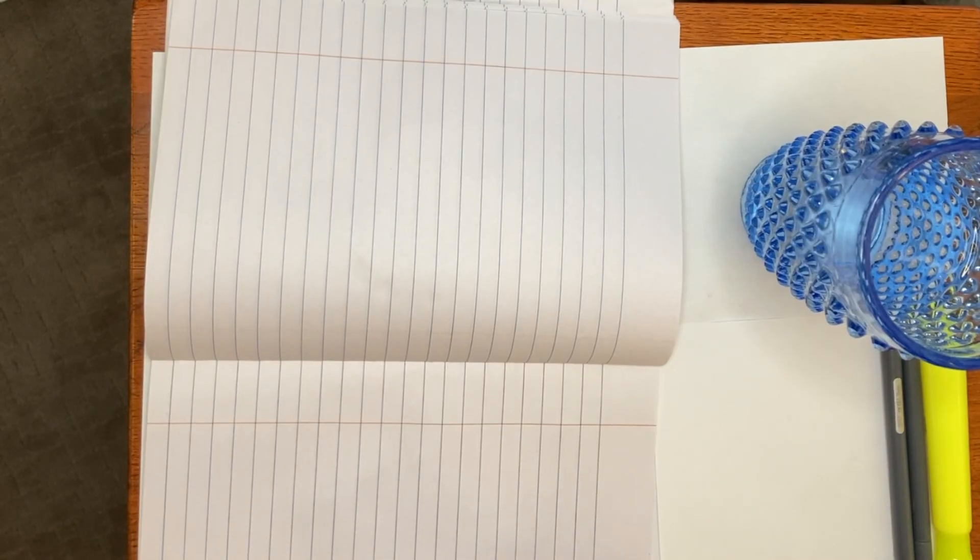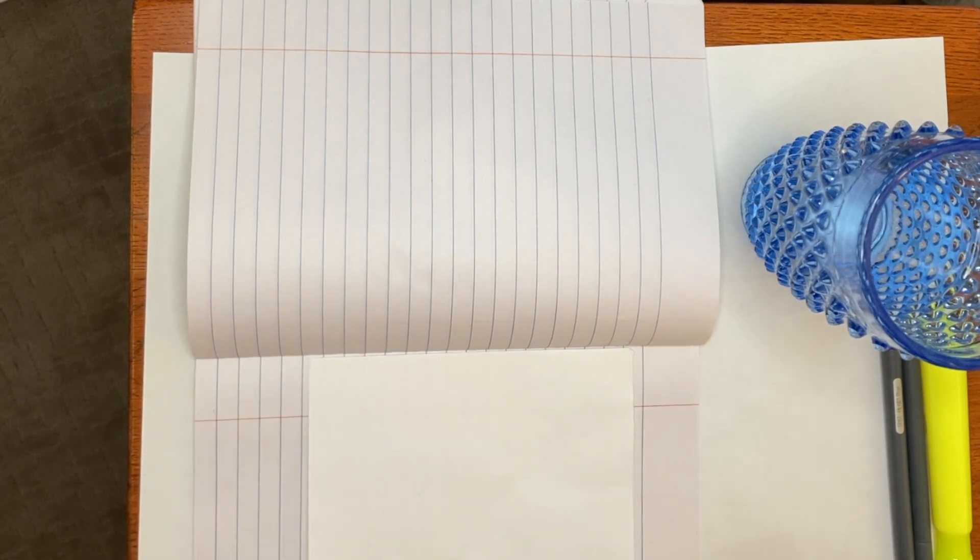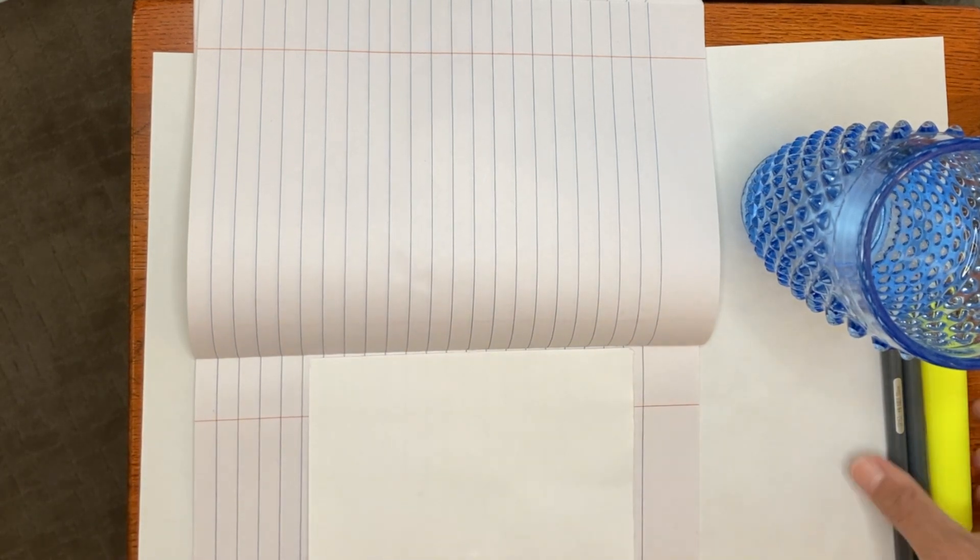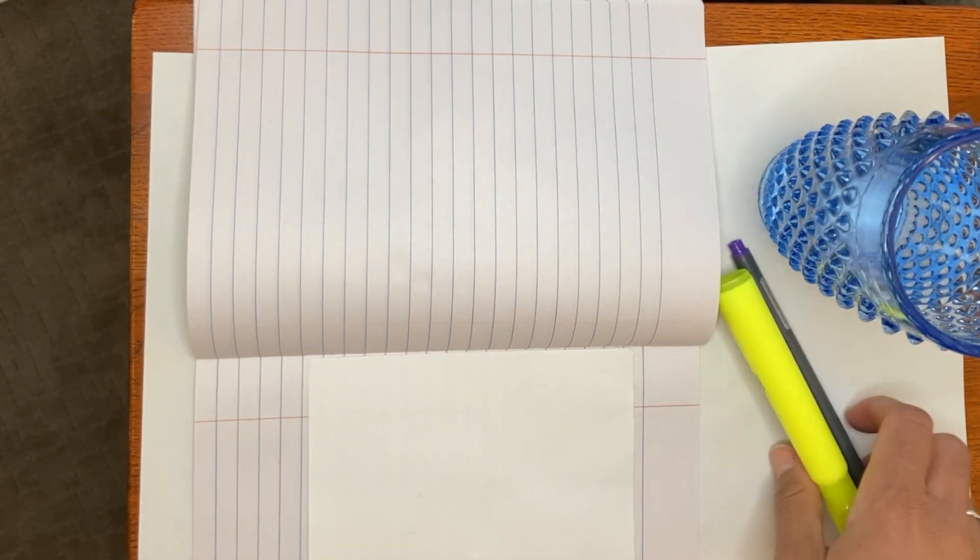First things first, you want to have something underneath your working space. So make sure you have a piece of paper or some newspaper underneath the paper that you'll be working on. Next, you want to have your cup of water and your markers or pens available to you.